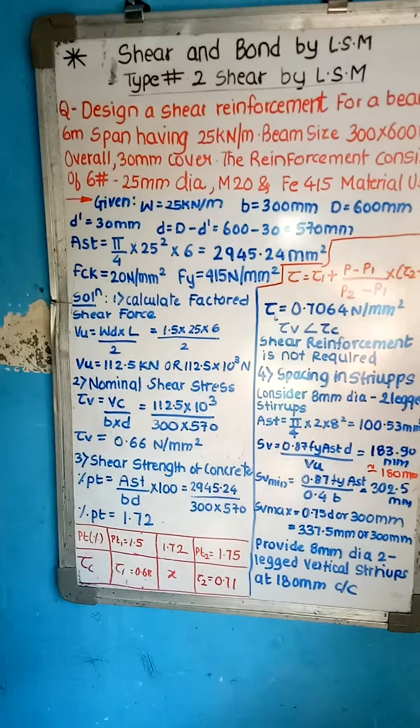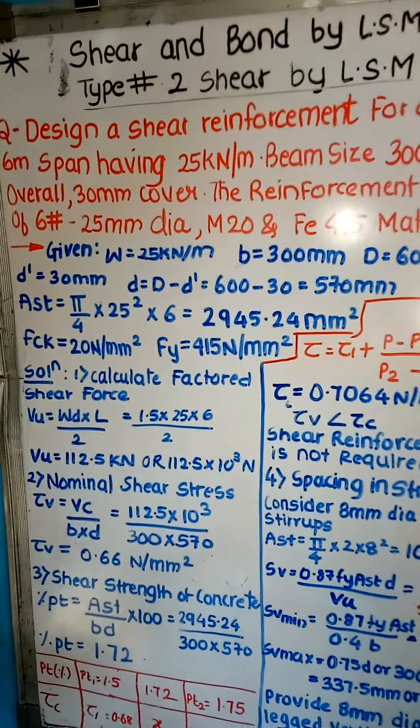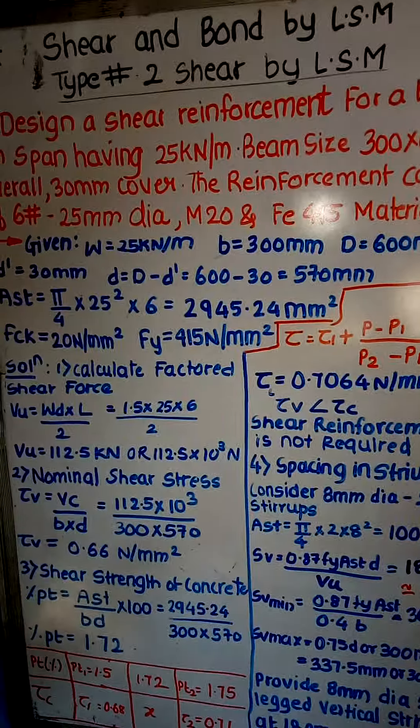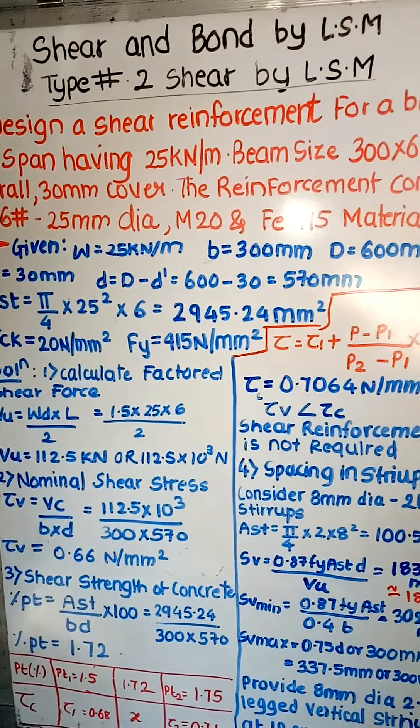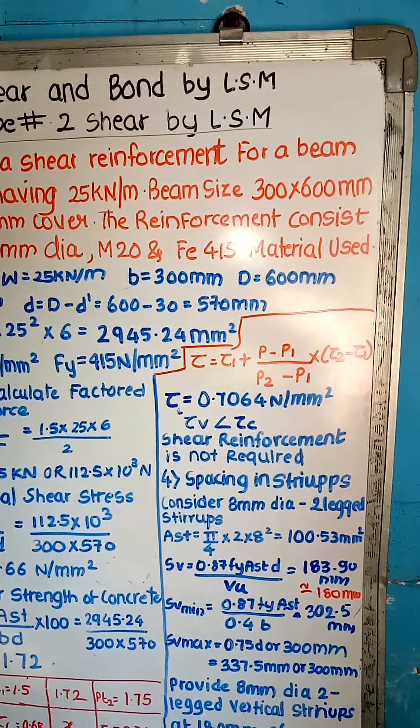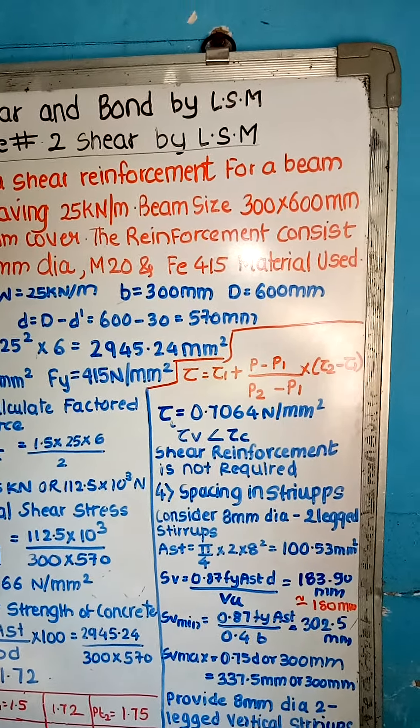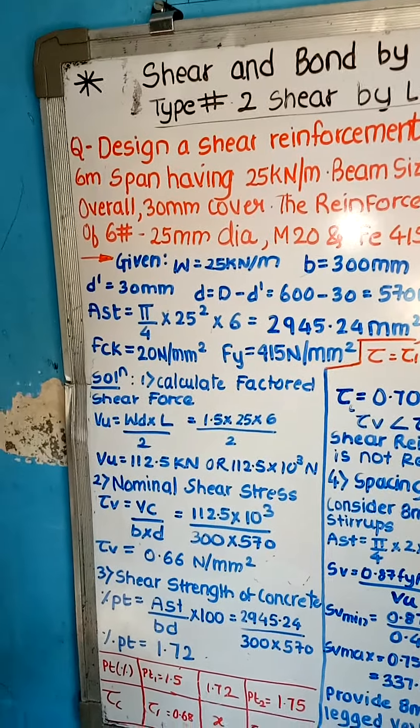What was given? We have W = 25 kN per meter. We have small b = 300 mm. We have overall capital D, question mentioned is overall 600 mm capital D.